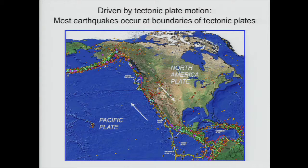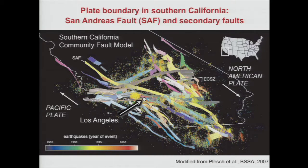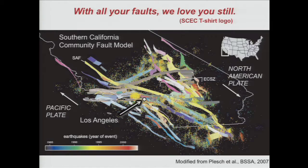If you zoom in onto the boundary between the North American plate and Pacific plate — we live right here in California — we see the sense of relative motion of the two plates. The boundary doesn't appear to be very simple. We see a bunch of faults. The yellow ribbons represent the faults, and the yellow dots represent seismicity. The main player turns out to be the San Andreas Fault — it accumulates most of the relative motion between the two plates. All the others are kind of a byproduct, side damage resulting from the deformation. The largest events occur along this yellow ribbon.